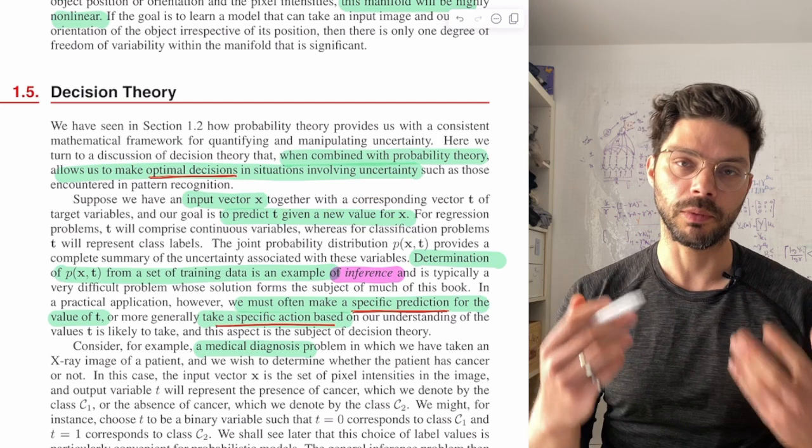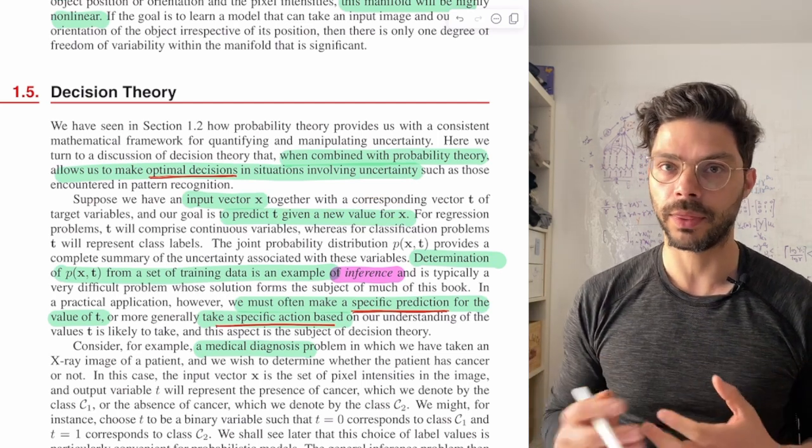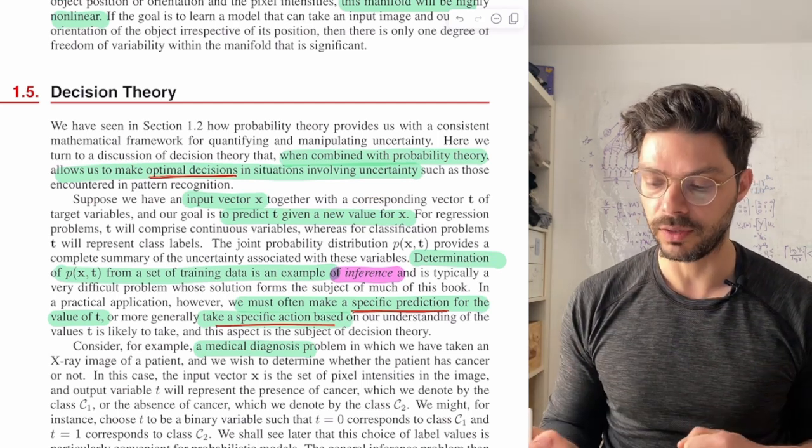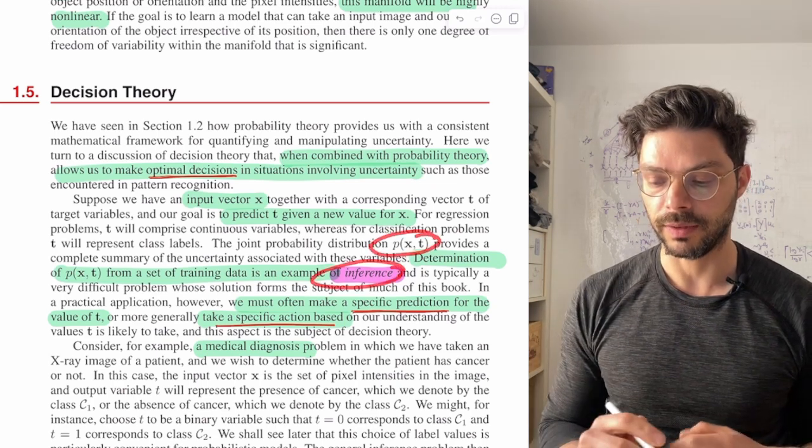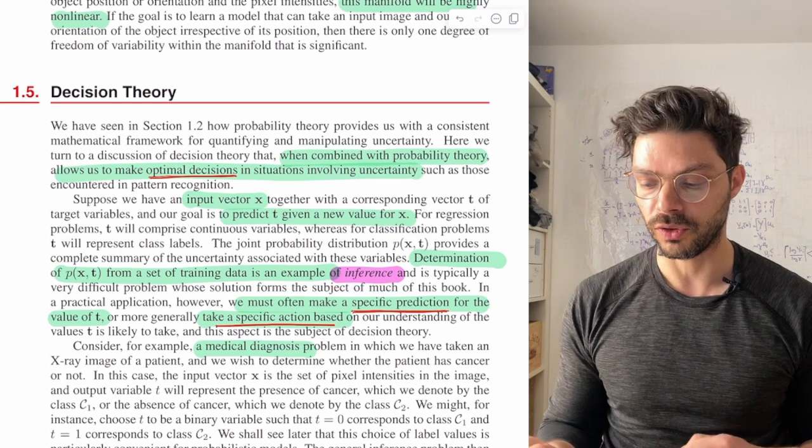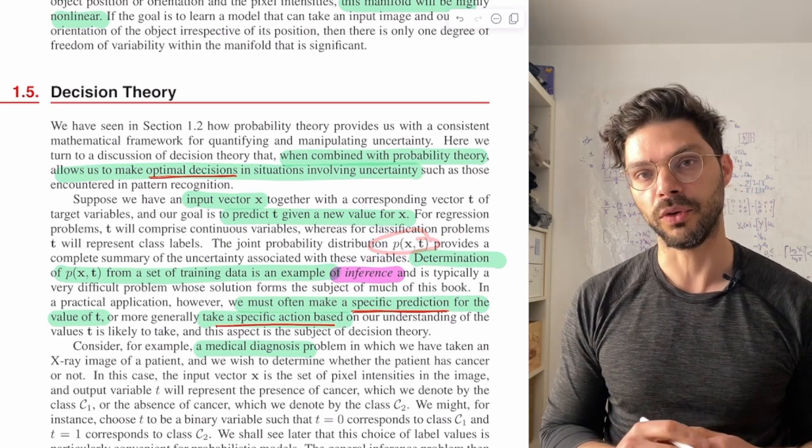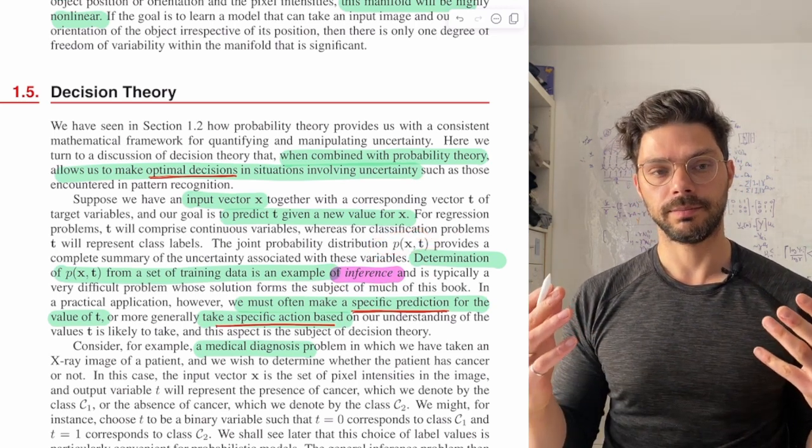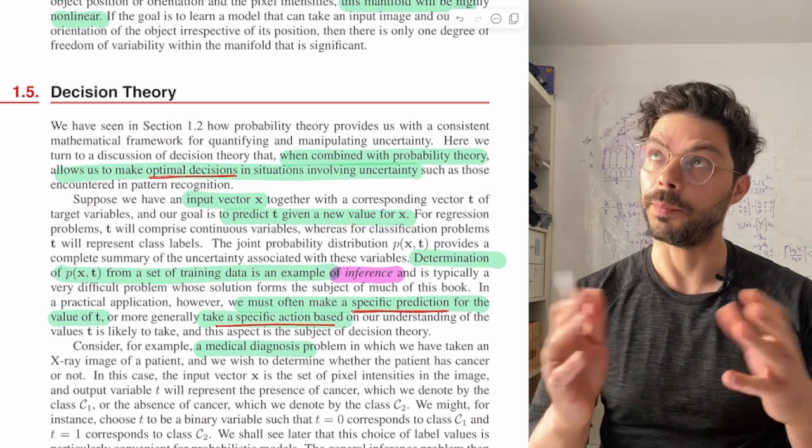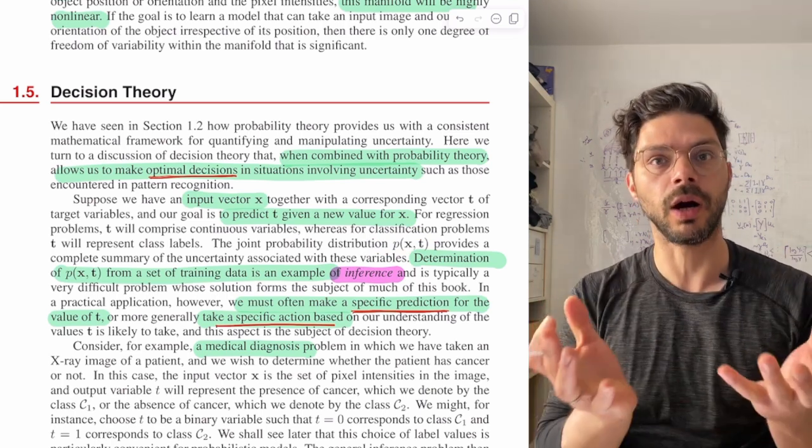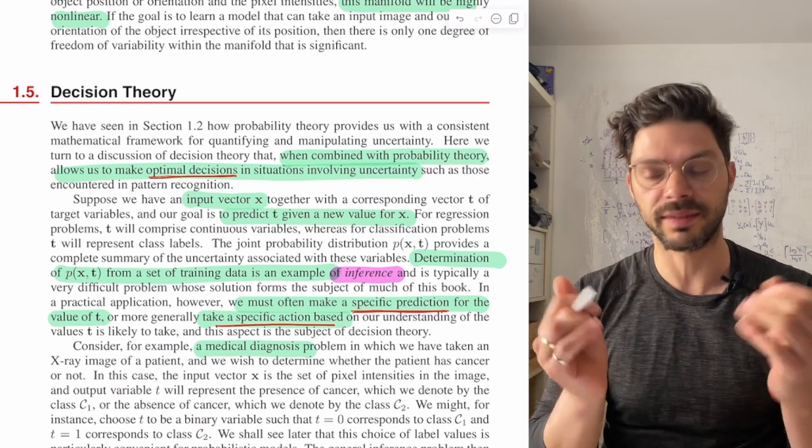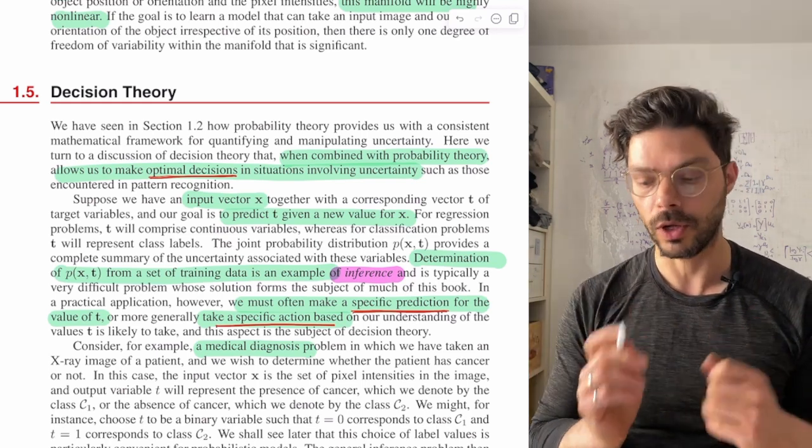And what we've been working on so far is essentially coming up with a quantification of uncertainty. And that quantification is called inference, and it gives us this joint distribution. The joint probability distribution is going to give us the most complete quantification of our uncertainty about the situation.